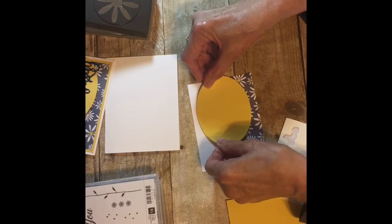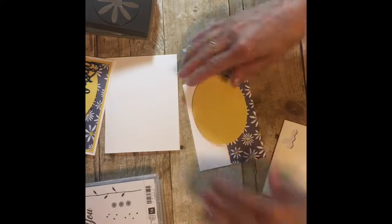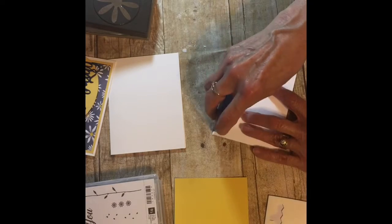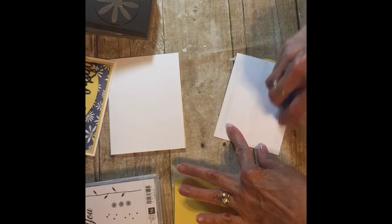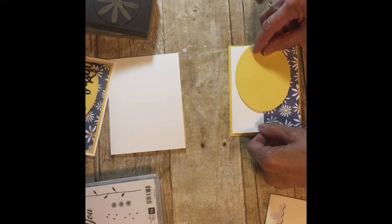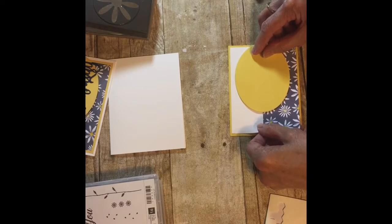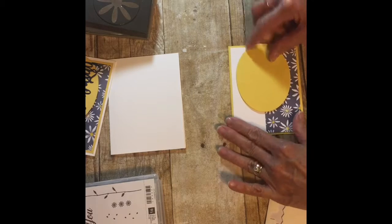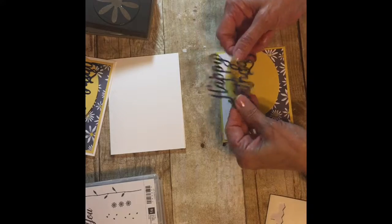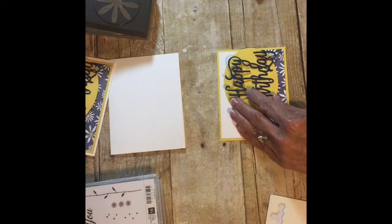Then I just put this on here about right there, and I could go ahead and glue this together so I'll see exactly where everything's going to be sitting. There we go like that, and then the little happy birthday goes there.